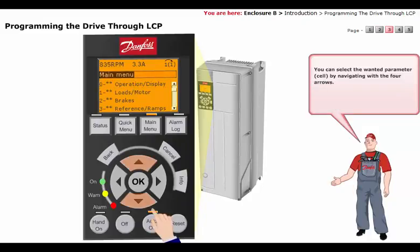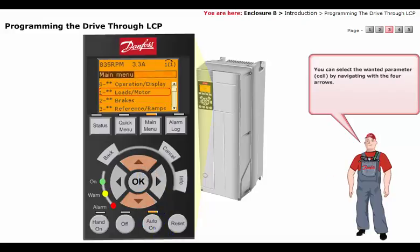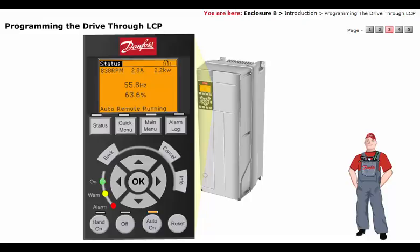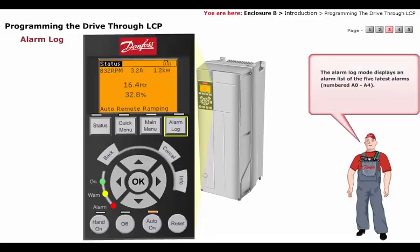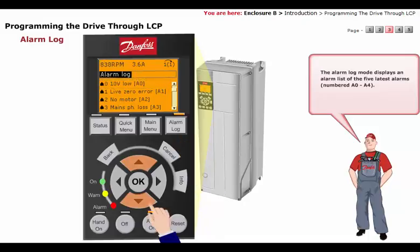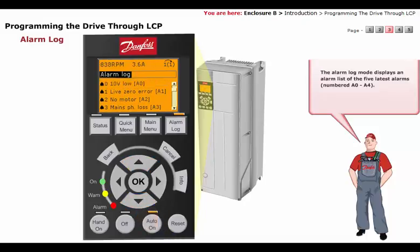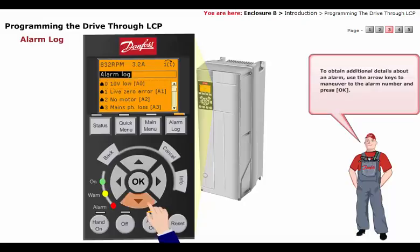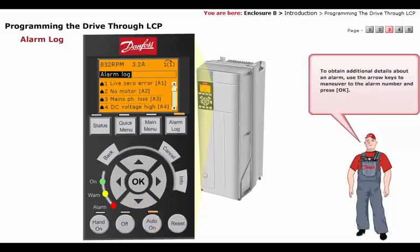You can select the wanted parameter cell by navigating with the four arrows. The Alarm Log mode displays an alarm list of the five latest alarms, numbered A0 to A4. To obtain additional details about an alarm, use the arrow keys to maneuver to the alarm number and press OK.